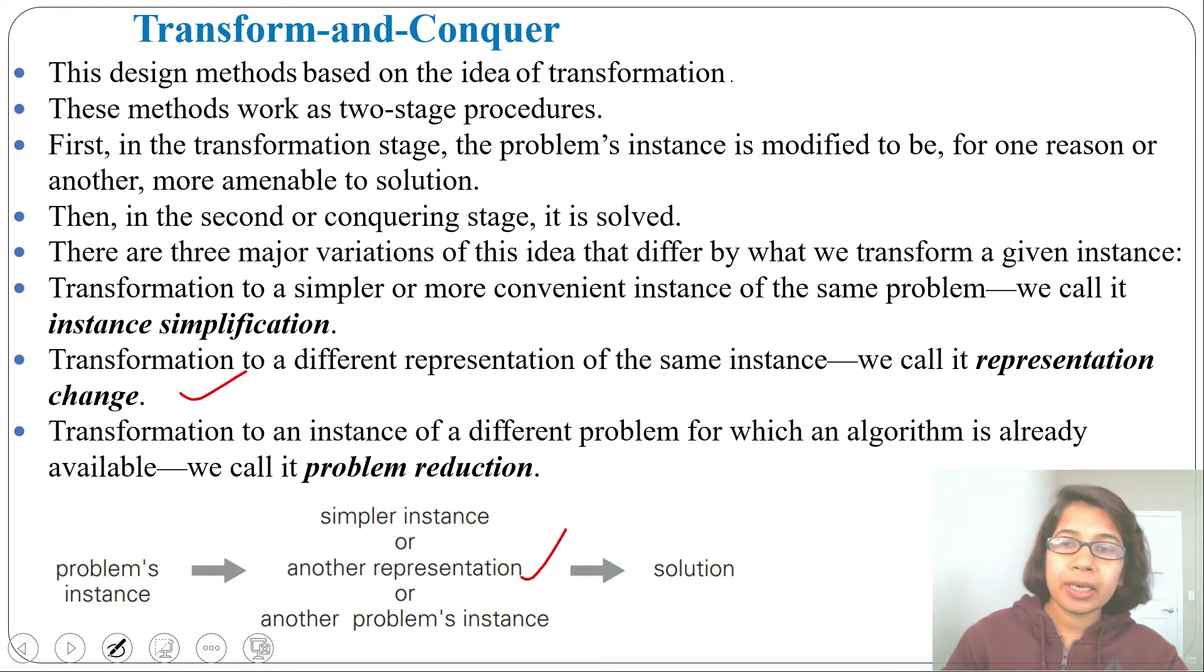Simpler instance: suppose one number contains three or four digits, we'll convert into simply two. Means four digits we are converting simply into one digit, that is a simpler instance. Some instance is given, some input is given, we are writing the simpler version of it, that is a simpler instance.